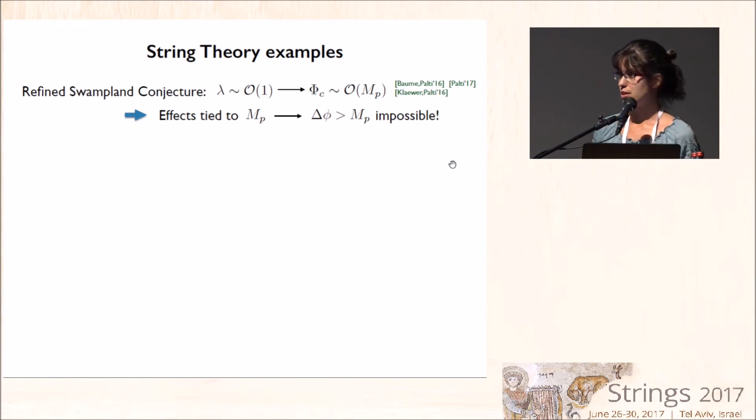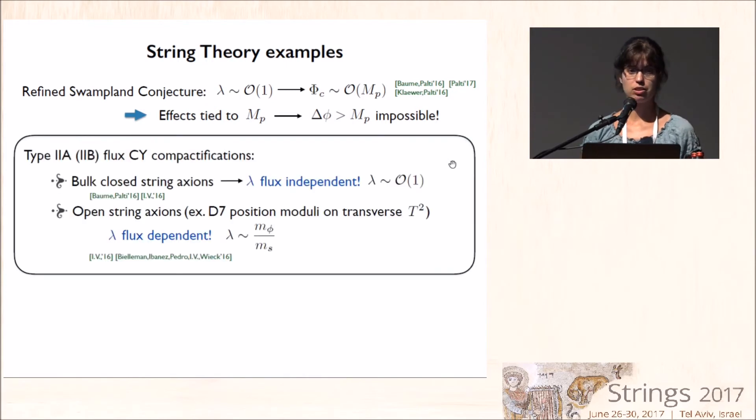Now, can we check this in some way? Well, at first, at least we can try to find evidence in favor or against this in concrete string compactifications. So let me consider flux compactifications of type IIB in orientifold Calabi-Yau threefold.